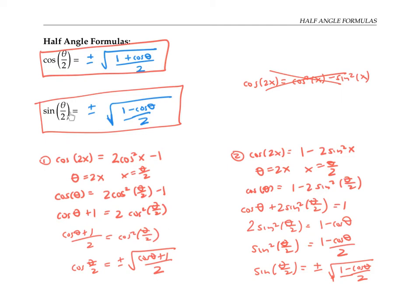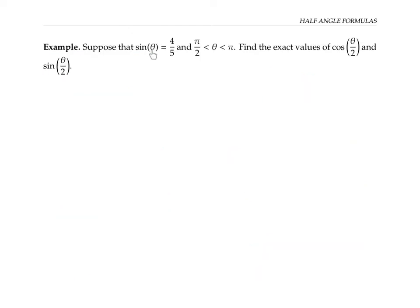Now that we've got our formulas and know where they come from, let's use them in an example. Let's suppose that sine theta is four fifths, and theta is between pi over two and pi — that means it's in the second quadrant. We want to find the exact values of cosine theta over two and sine theta over two. Since theta over two will be between pi over four and pi over two, theta over two is in the first quadrant, which means both cosine theta over two and sine theta over two will be positive.